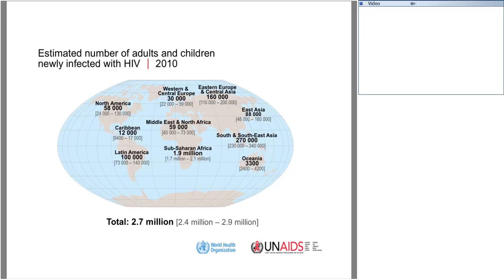When looking at estimated new infections, North America had 58,000 new infections in 2010, while Sub-Saharan Africa continues to carry a large number at 1.9 million. South and Southeast Asia also have large numbers at 270,000 new infections. Eastern Europe and Central Asia has a large epidemic as well, with 160,000 new infections in 2010 — almost triple the number that occurred in the United States that same year.